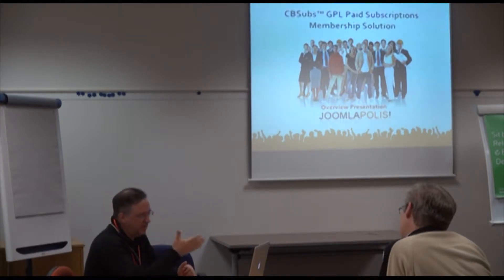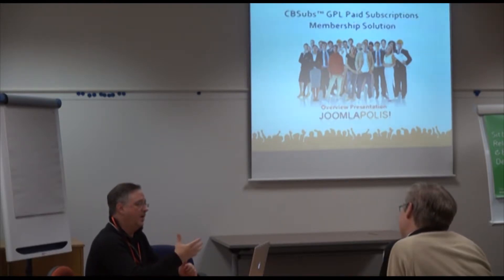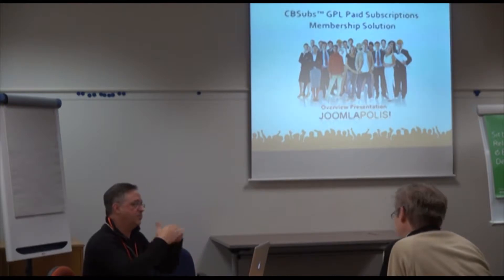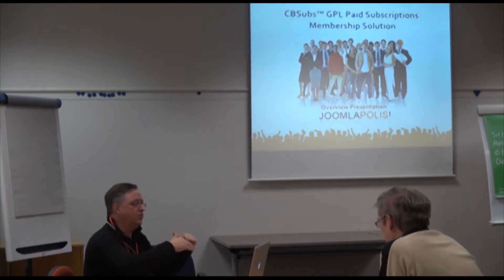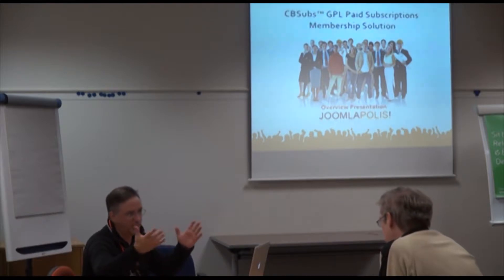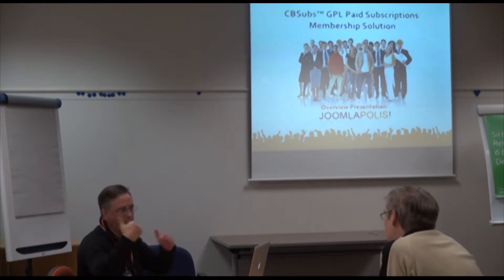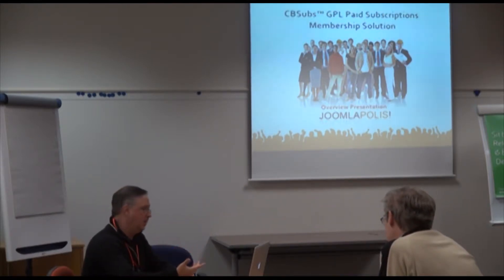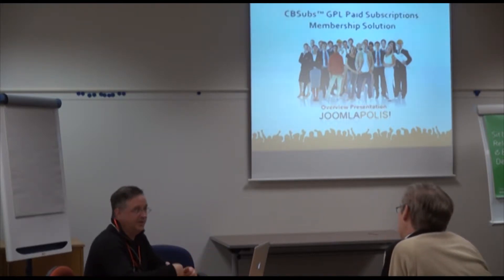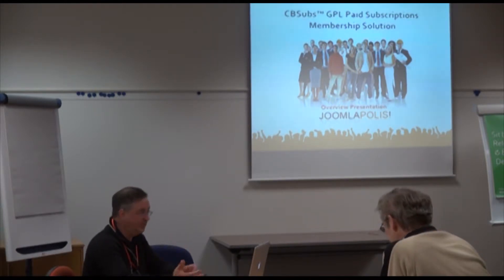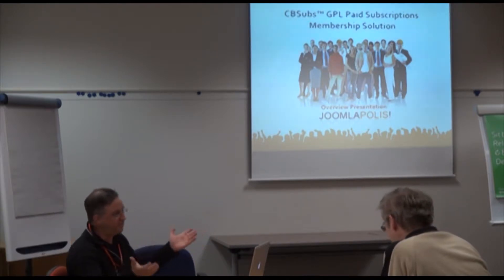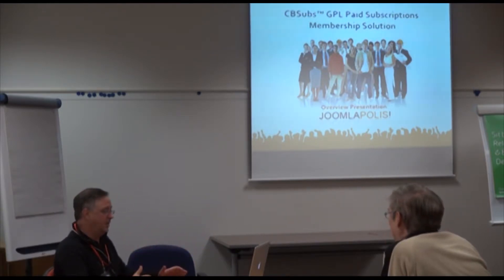CB Subs has its own ACL internally. You can program a subscription plan so that when somebody subscribes, they are added to a Joomla ACL group and protection is handled through Joomla. But you don't have to — it has a built-in ACL that will handle it for you. You can also combine both approaches.